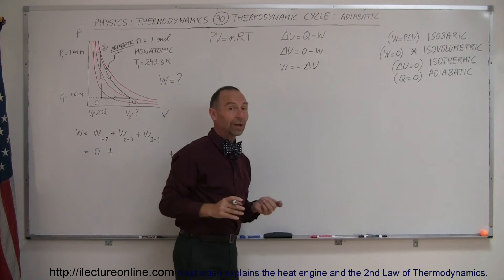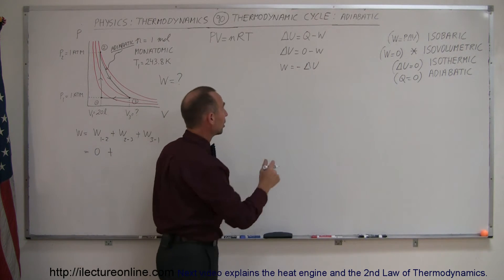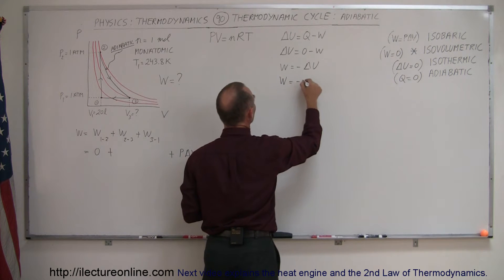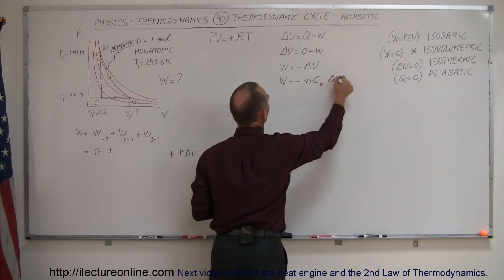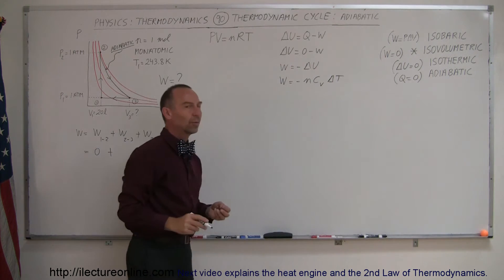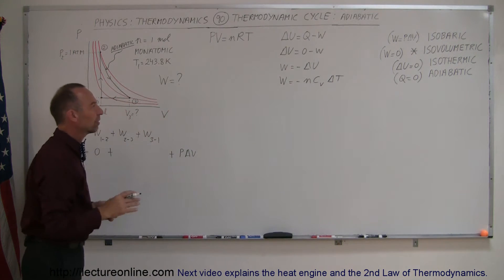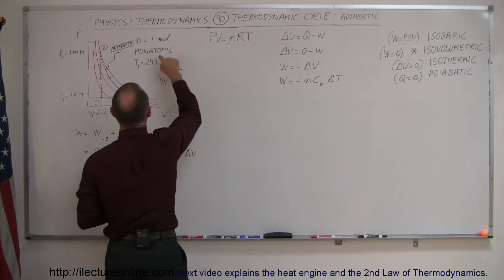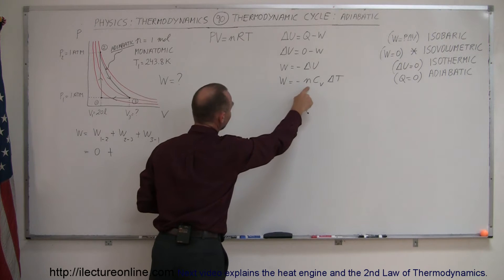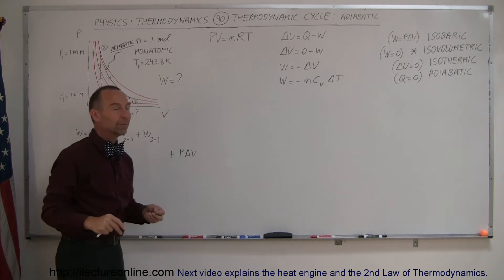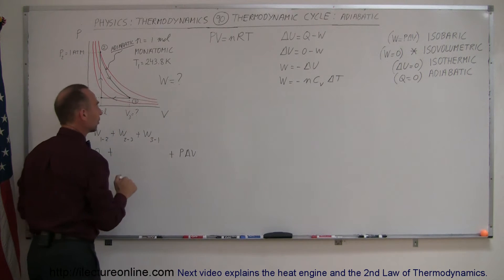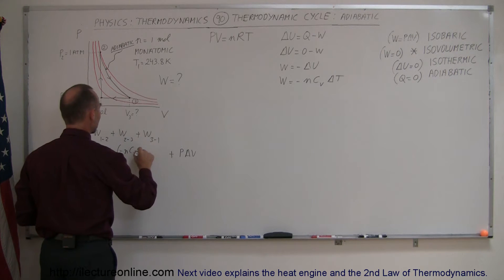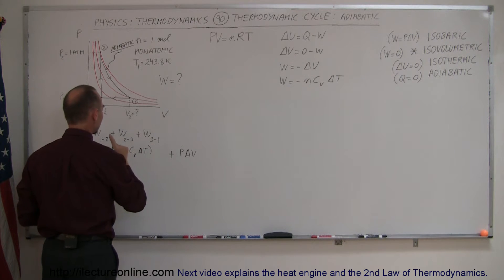If you remember the change in internal energy equation, then you can say the work done in the adiabatic process equals minus N times C sub V times delta T. So all we have to do is find the change in temperature, know what C sub V is for our gas — we have a monatomic gas — and N is just the number of moles, and we can plug that right in.